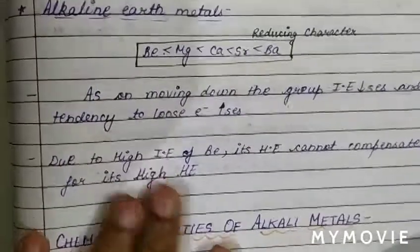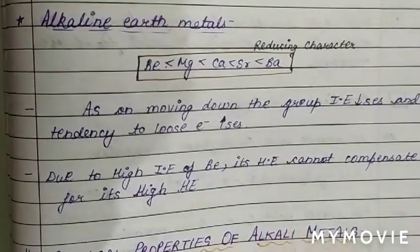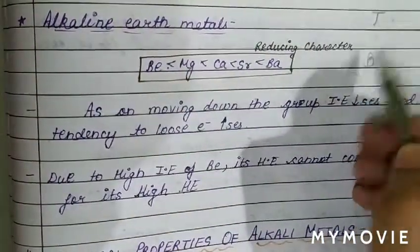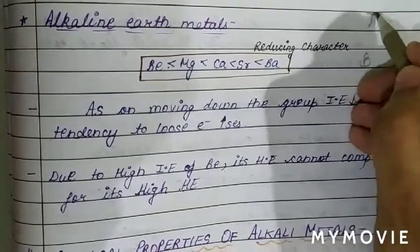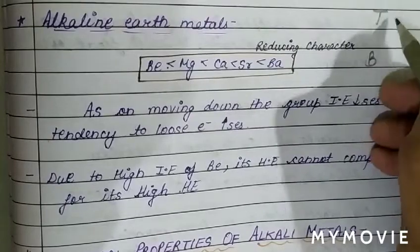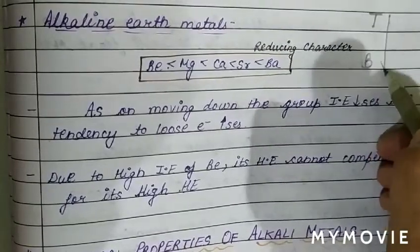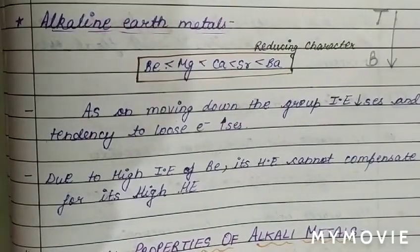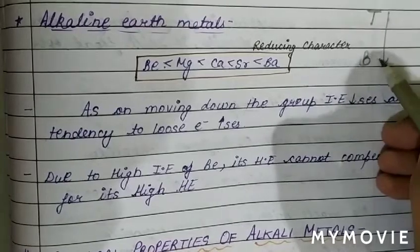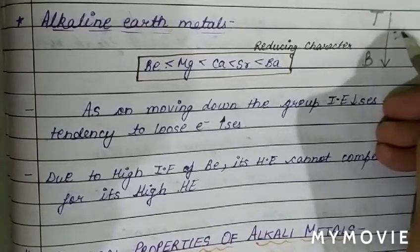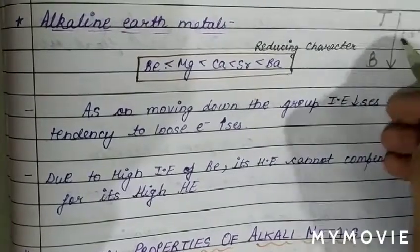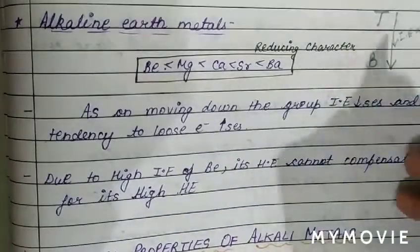In the case of alkaline earth metals, the reducing power increases from top to bottom. As we move from top to bottom, size increases, and when size increases, ionization energy decreases — because ionization energy is inversely proportional to the size of the atom.